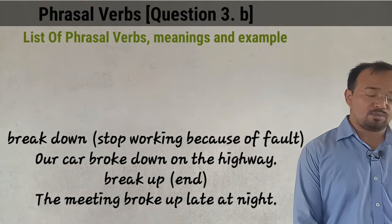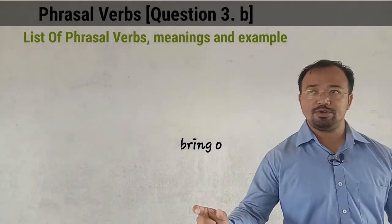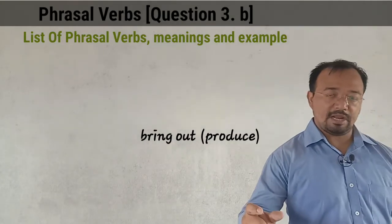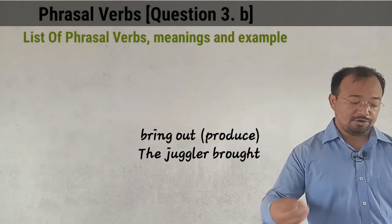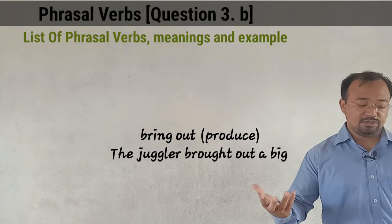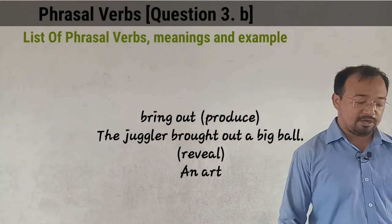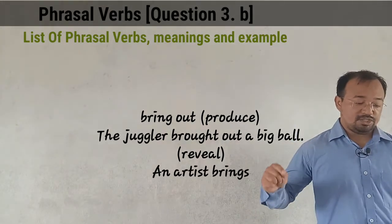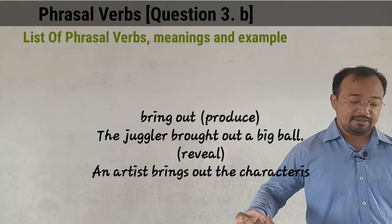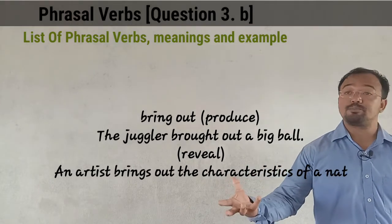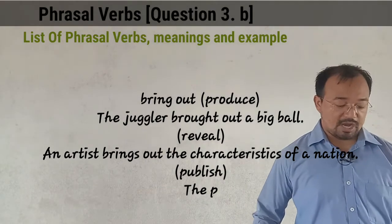Next, starting with the verb 'bring', the phrasal verb 'bring out' has three meanings: to produce, to reveal, and to publish. First example with 'produce': 'The juggler brought out a big ball.' Here 'bring' becomes 'brought' in the past form — 'brought out' means to produce.